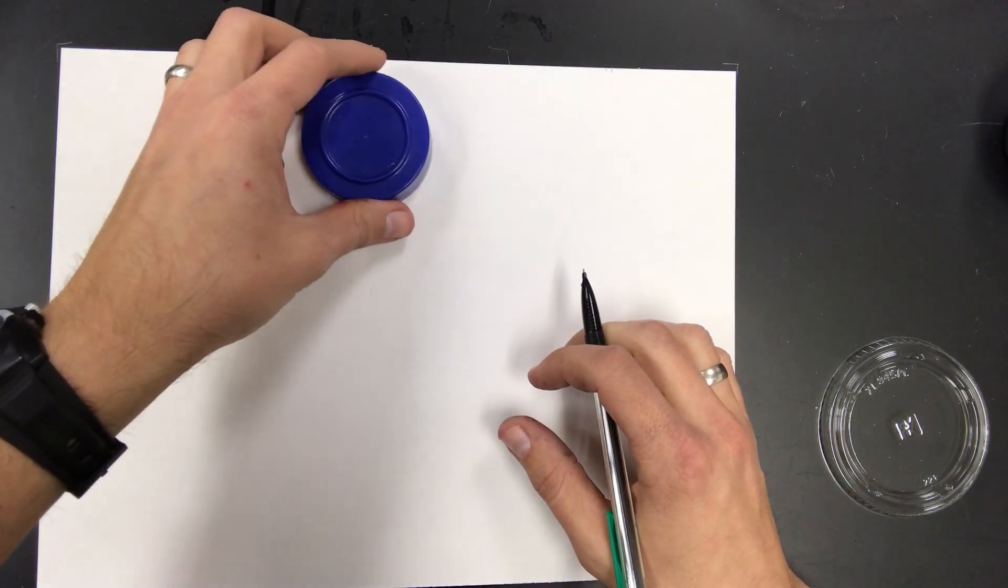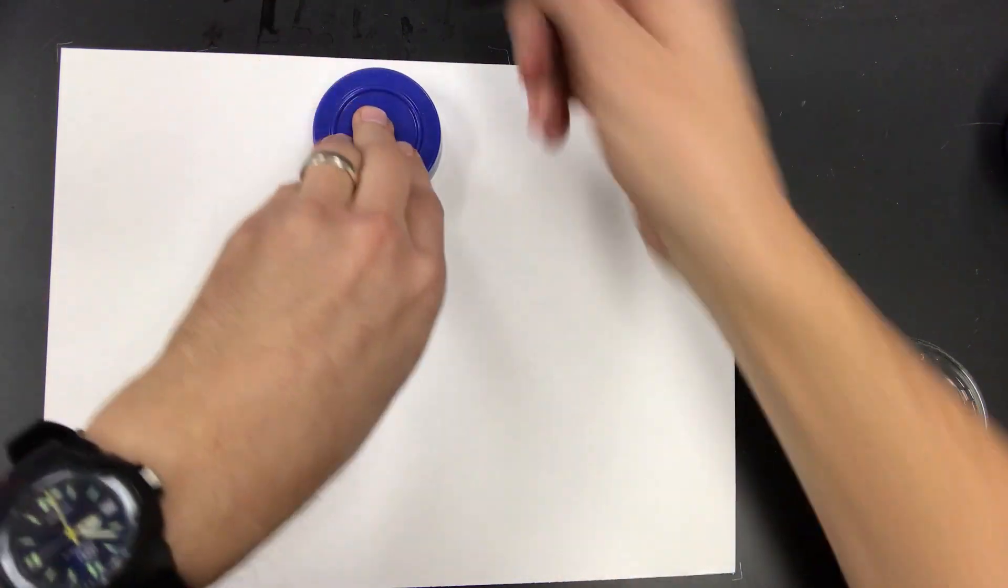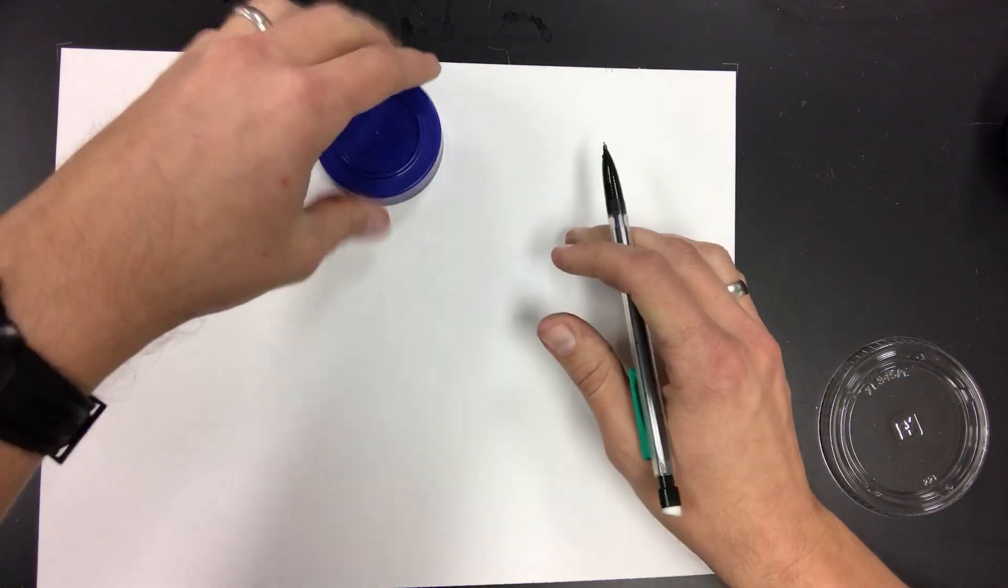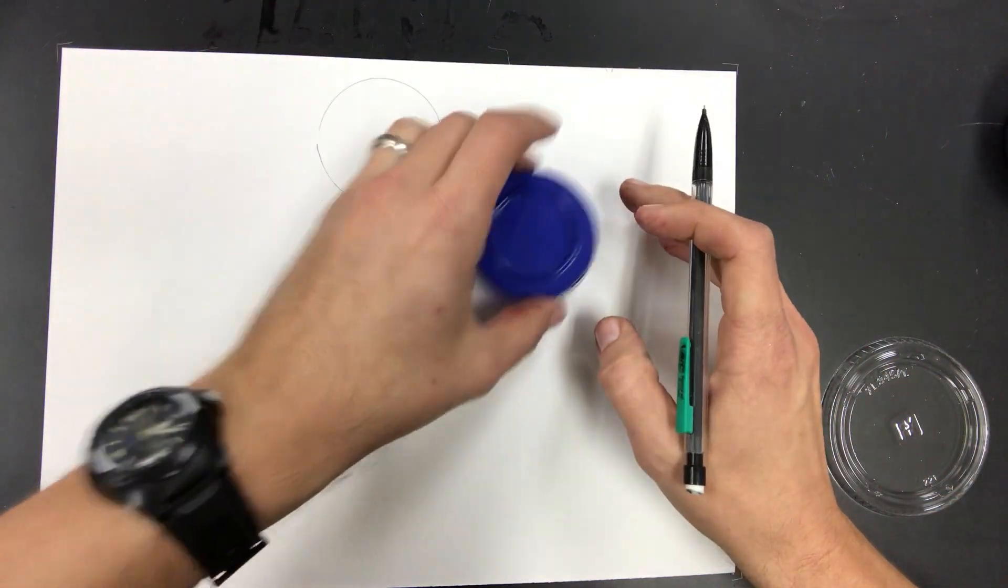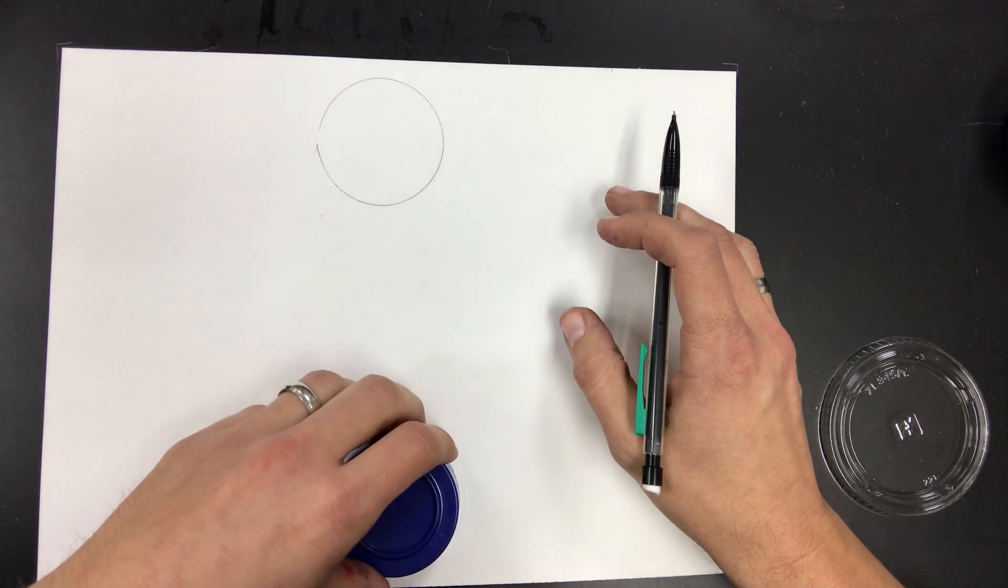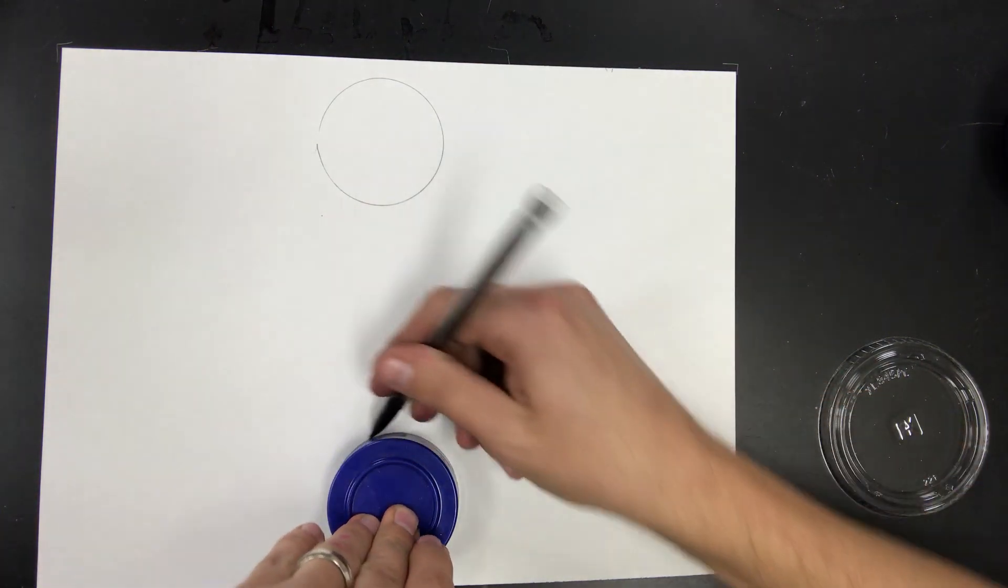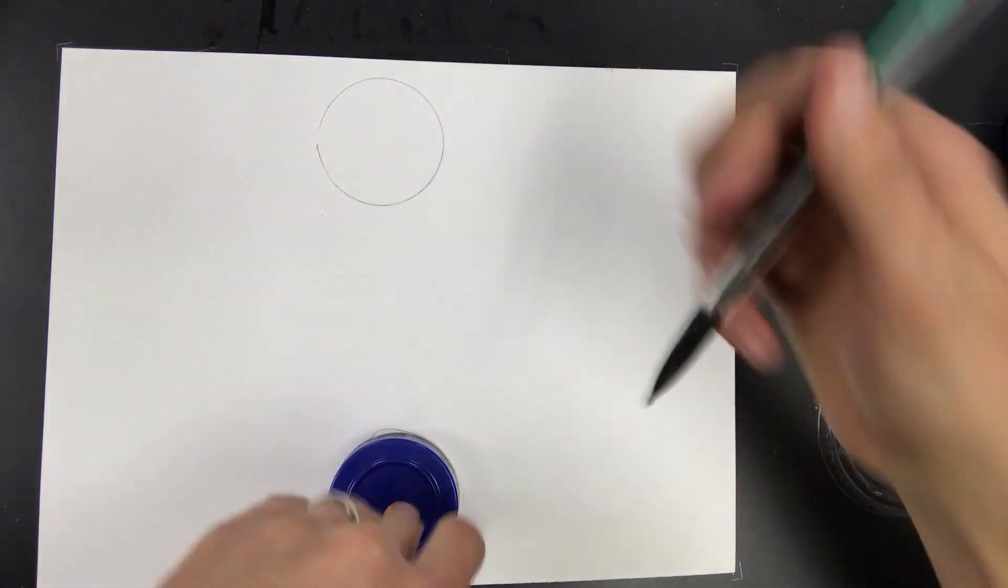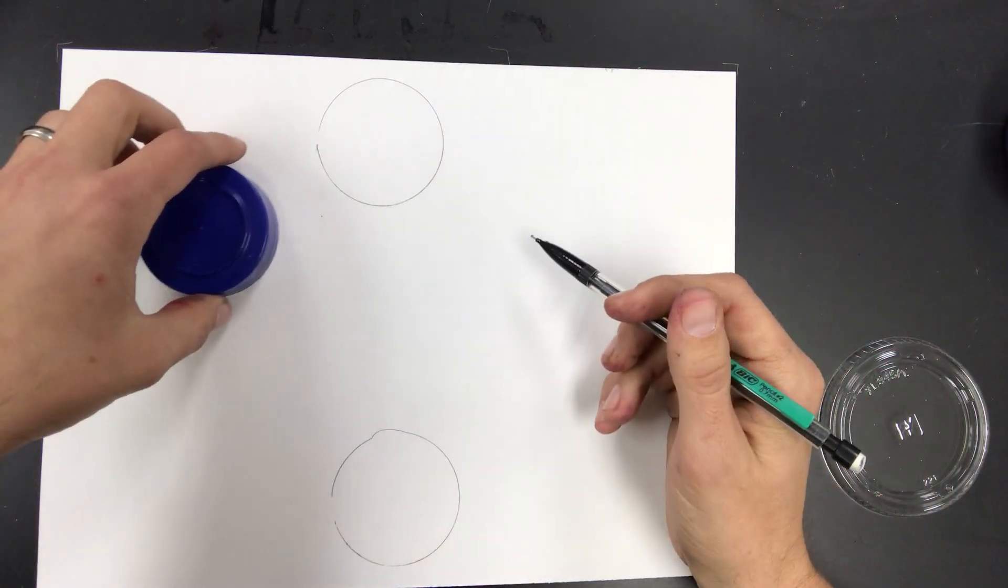So let me show you how we're going to do it. There are some lids at your table and you're going to first trace six of them in a circular pattern. So I'm going to start towards the top here, trace my circles. I'm going to go ahead and go to the bottom and trace that circle.